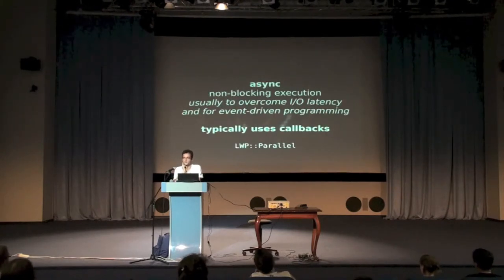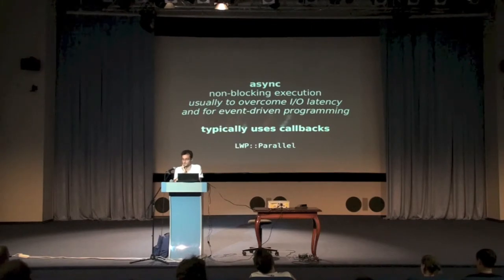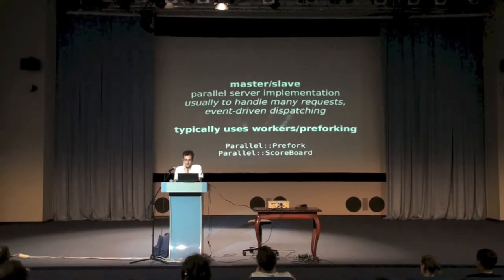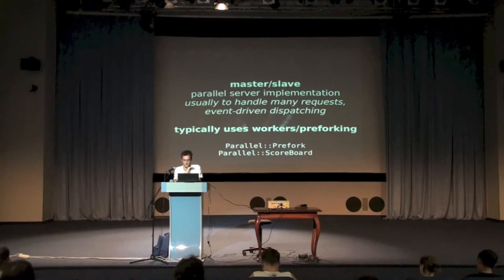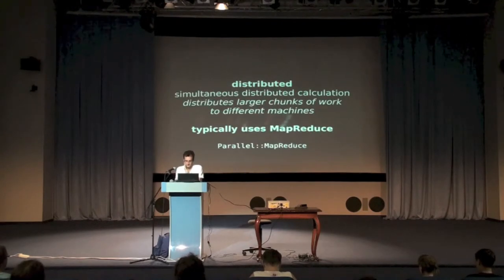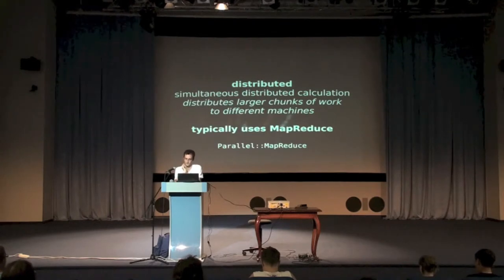Another thing is asynchronous programming, which can be used either to overcome latencies on the file system or on the network, or if you follow an event-driven paradigm. This is sometimes concurrent, not necessarily parallel, but can be parallel. You see callbacks often when using crawlers. There are also master-slave principles where you have a server with many requests dispatched to different processes — Apache usually works like that, with worker threads or pre-forking models. And of course there are distributed computing approaches across multiple machines, but I don't want to handle servers here.